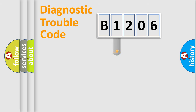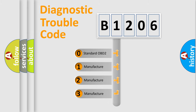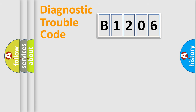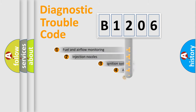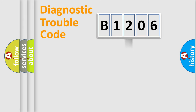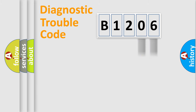This distribution is defined in the first character of the code. If the second character is expressed as zero, it is a standardized error. In the case of numbers 1, 2, or 3, it is a manufacturer-specific error expression. The third character specifies a subset of errors. The distribution shown is valid only for the standardized DTC code. Only the last two characters define the specific fault of the group.